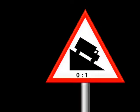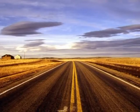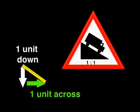This sign says the gradient is zero to one. This means that we go down zero units for every one unit across. This kind of slope is no slope at all. It's just flat. What about a slope of one to one? For every one meter you go down, you move the same distance horizontally or across.